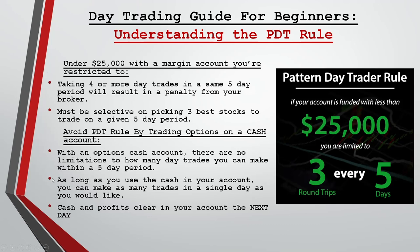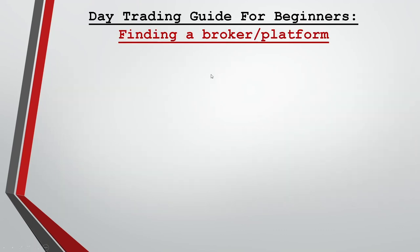In summary, if you have under $25,000, the best thing to do is have a cash account so you are not subject to the PDT rule. If you have under $25,000 with a margin account, you will have restrictions on how many times you can open and close a position within a single day period. Once you understand the PDT rule and its limitations, the next step is to find a broker and platform.